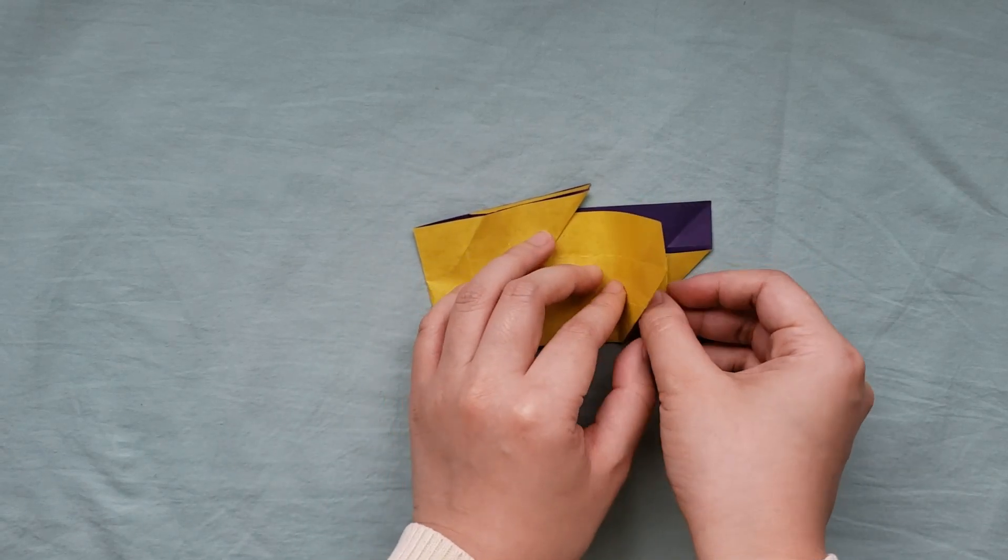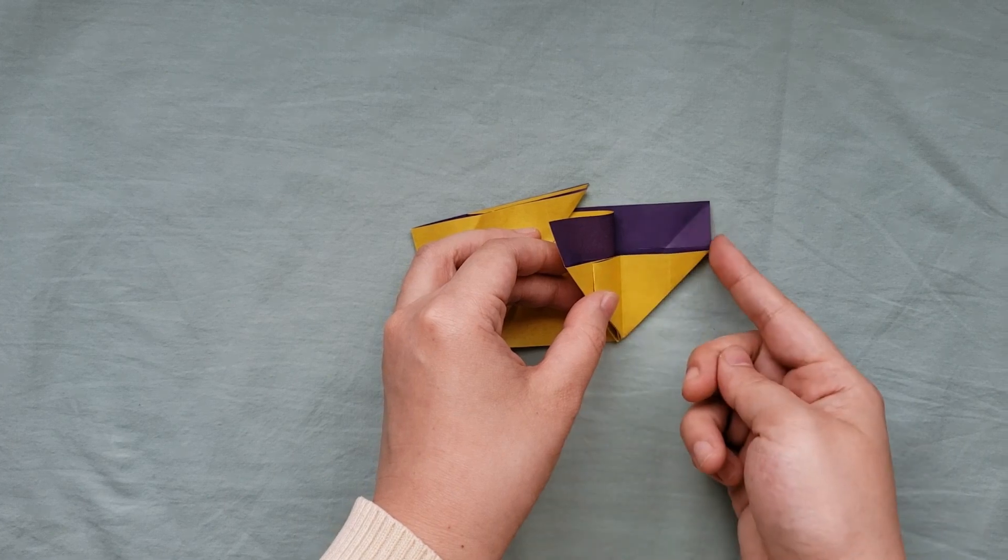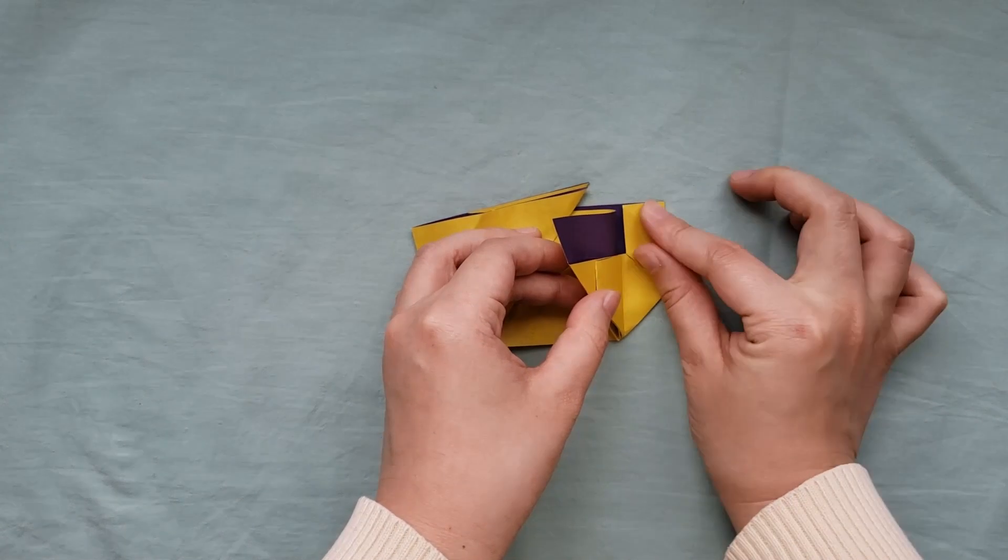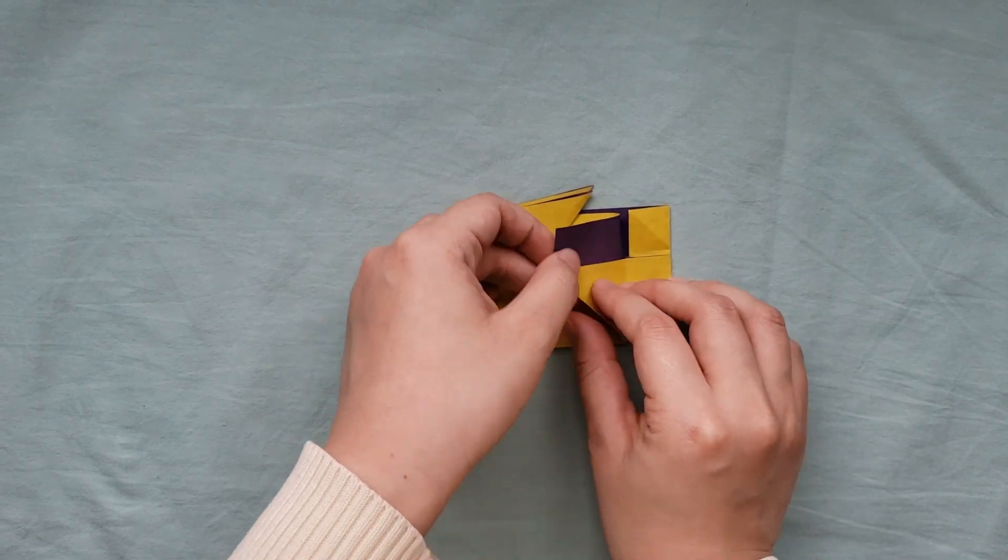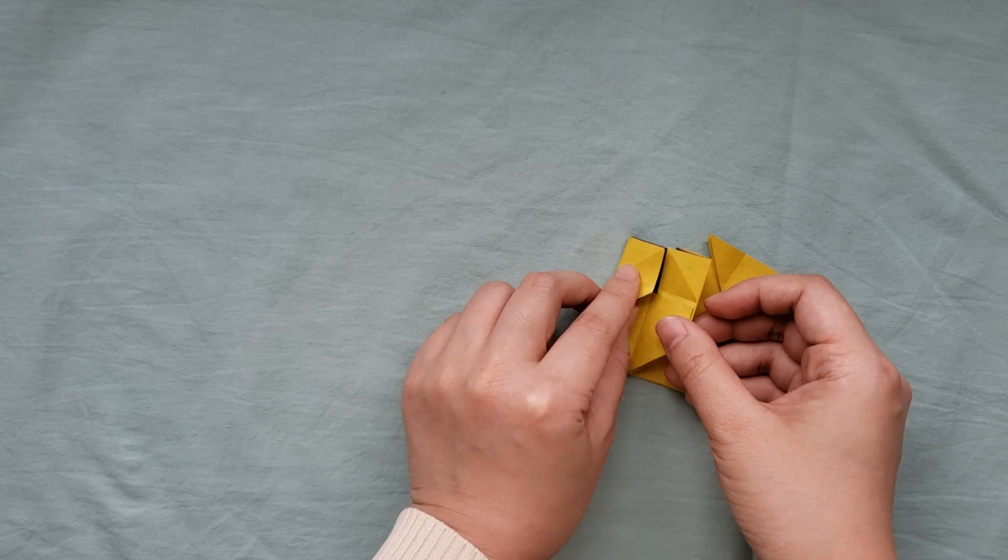Now flip open one of the tail folds and fold the outside edge towards the center. Do this on the other side as well and close the tail.